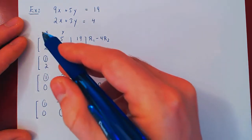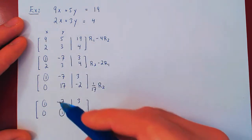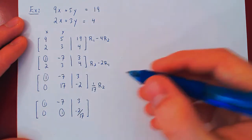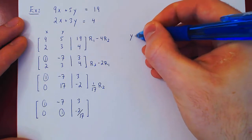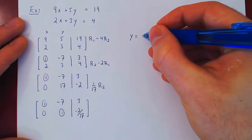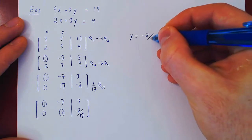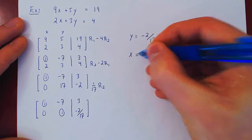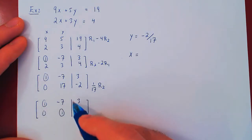And you can see, as both x and y are leading variables, the system will have a unique solution. And now we can solve using backwards substitution. So we'll solve for y first using its leading 1. Y is negative 2 over 17.